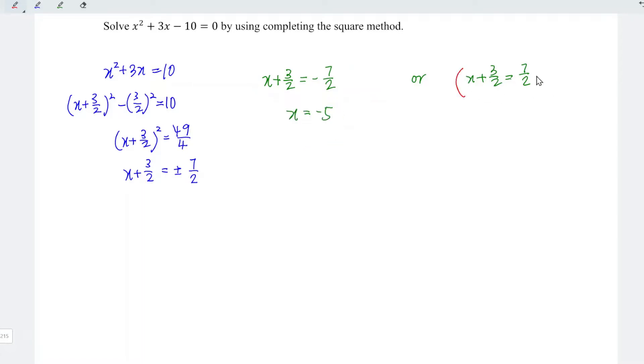And for the second equation, also we minus 3 over 2 from both sides. So for the left-hand side, again we have x. And this equals 7 minus 3, which equals 4, divided by 2. Which means the second solution is 2.